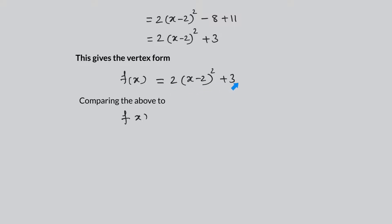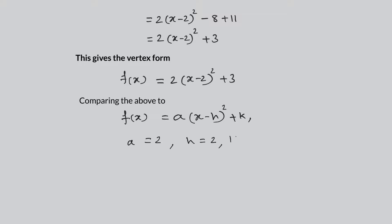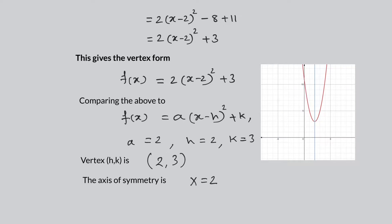Comparing this to the vertex form of a general quadratic, which is f of x equals a times x minus h squared plus k, we see that h is equal to 2, a is equal to 2, and k is equal to 3. The vertex (h, k) is (2, 3), and the axis of symmetry is aligned to the x-coordinate of the vertex, which means x equals 2 is the axis of symmetry.